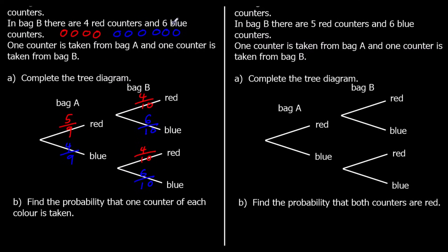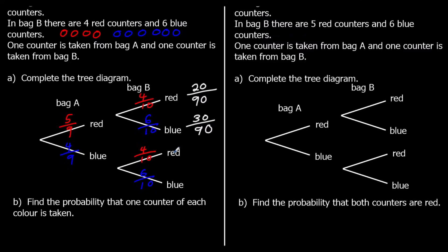Now to answer the questions — if we wanted the probability of red then red, we would multiply these two probabilities. So the probability of red then red is five ninths times four tenths. To multiply fractions, we times the top and times the bottom. So the probability of red then red is five times four, which is 20, out of nine times ten, which is 90. The probability of red in bag A then blue in bag B is five times six, giving 30 out of 90. And the probability of blue then red is four times four, which is 16 out of 90. And the probability of blue then blue is four times six, which is 24 out of 90.